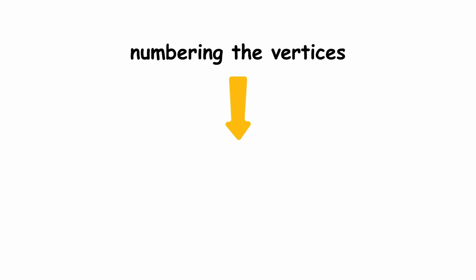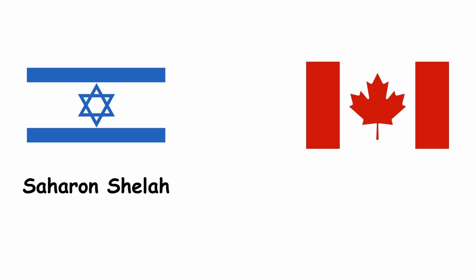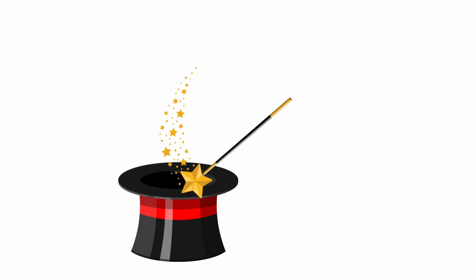A version of the conjecture also existed in the uncountable case, where numbering the vertices with natural numbers is impossible. However, it has been disproven by Israeli mathematician Saharan Shela and Canadian mathematician Eric Charles Milner, though they also showed that adding a third color does the trick.